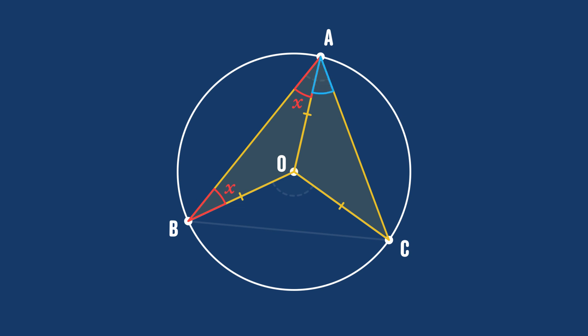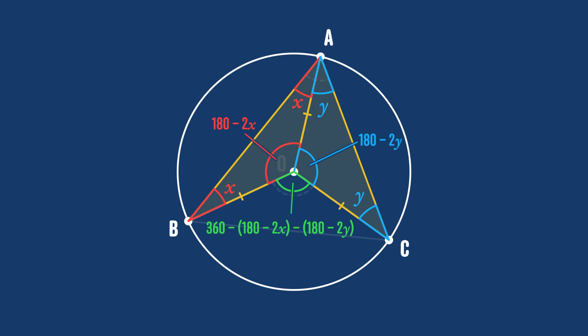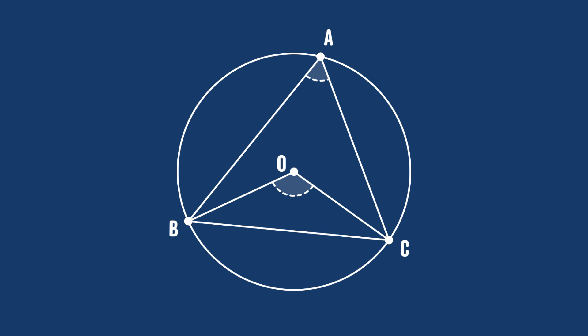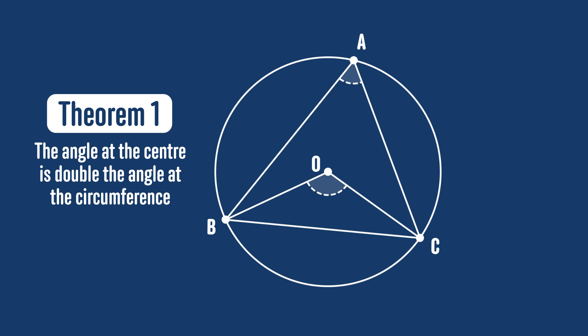Similarly, if we label angle OAC as Y, then angle OCA is also Y. Since angles in a triangle add up to 180 degrees, angle AOB is 180 minus 2X, and angle AOC is 180 minus 2Y. Then since angles around a point sum to 360 degrees, angle BOC equals 360 minus (180 minus 2X) minus (180 minus 2Y), which simplifies to 2X plus 2Y — exactly double X plus Y. This means angle BOC at the centre is exactly double angle BAC at the circumference.